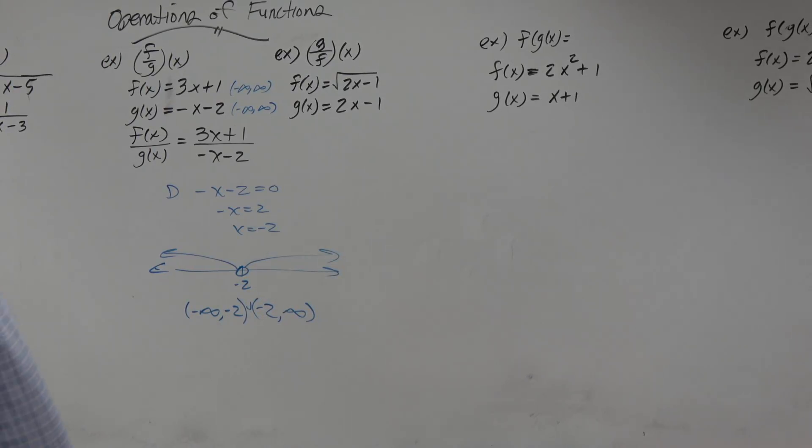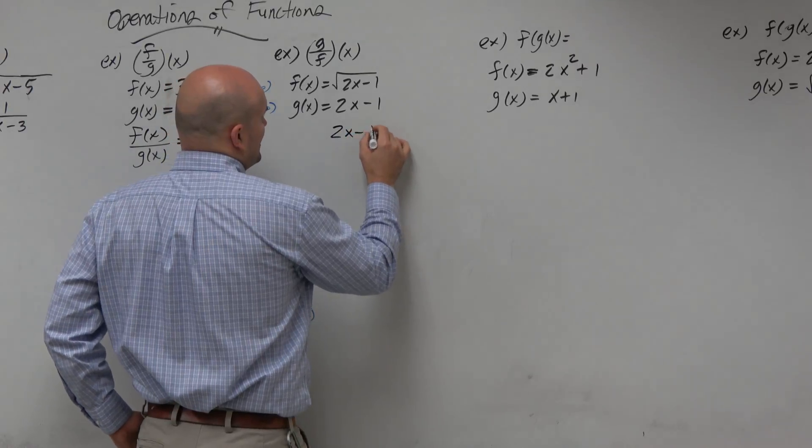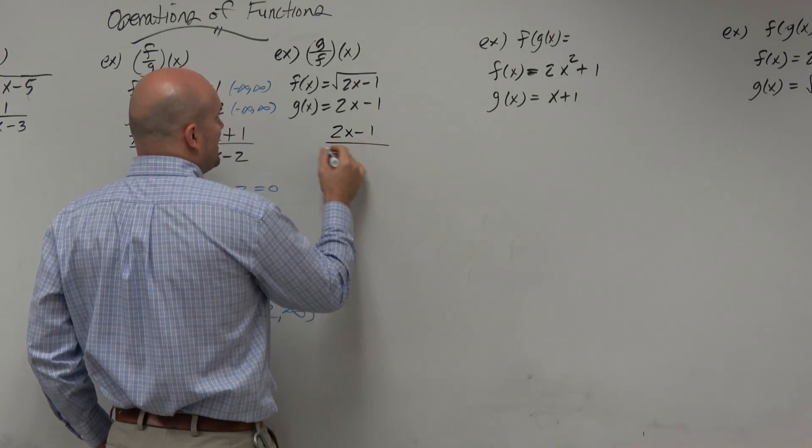One is we have f of g of x. And now what we're doing is we're taking the g of x function, 2x minus 1, and we're putting it over the f of x function.